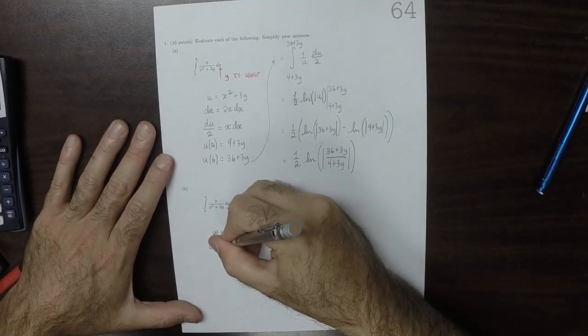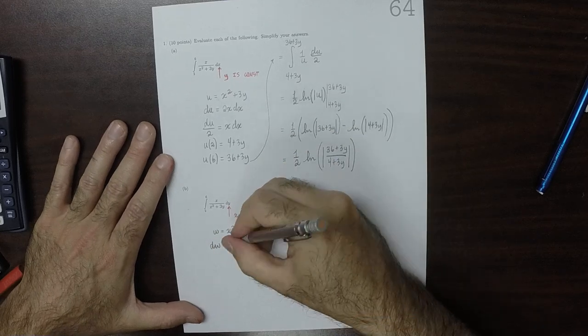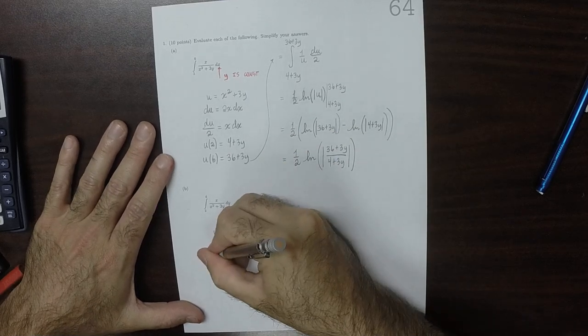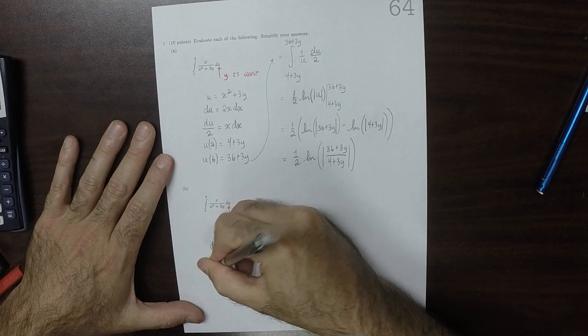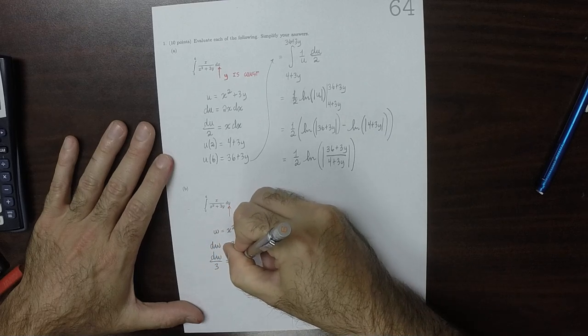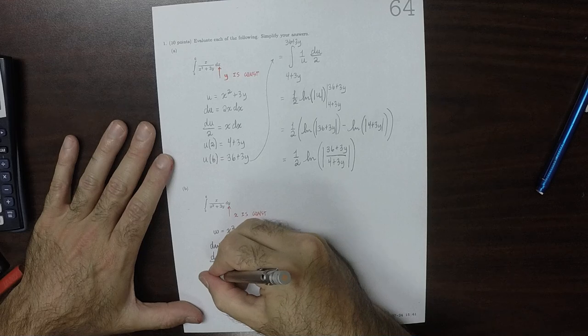So dw then is 3dy. So that dw over 3 is dy. I'll change the limits now.